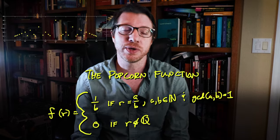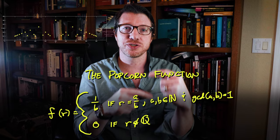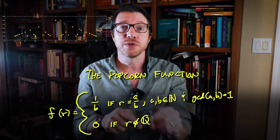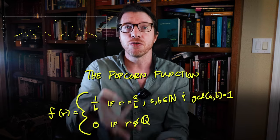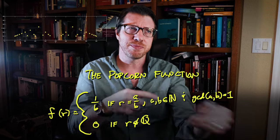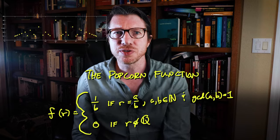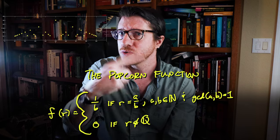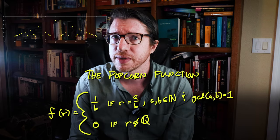For each rational point, if we reduce that rational number to its simplest form, like a over b, with a and b having no common divisors, then the function outputs one over b.